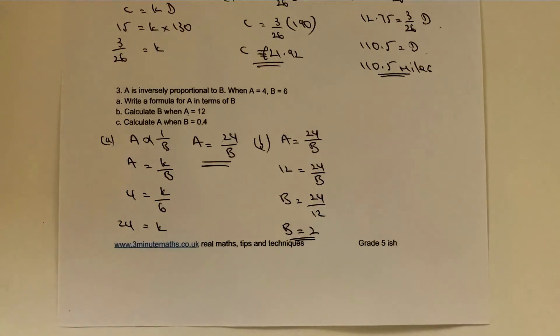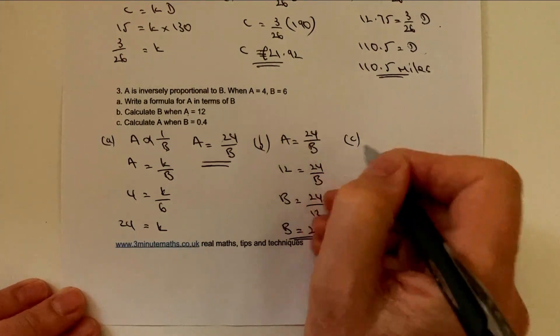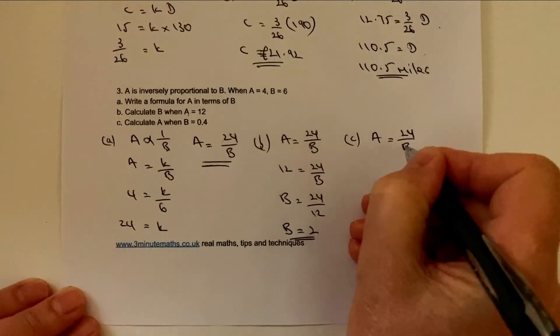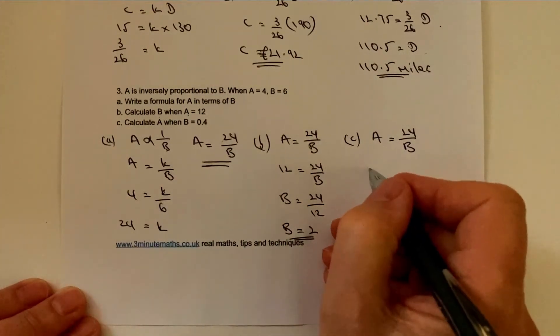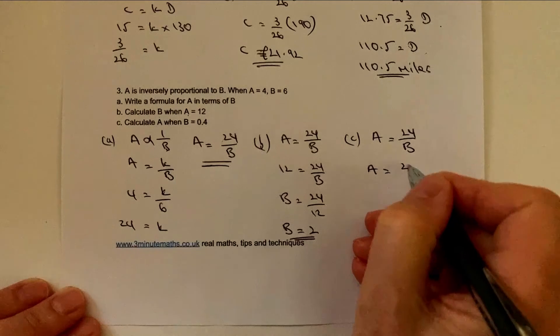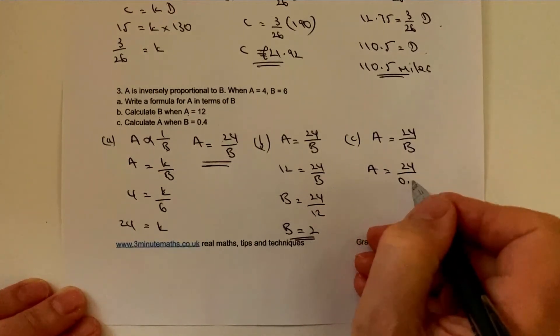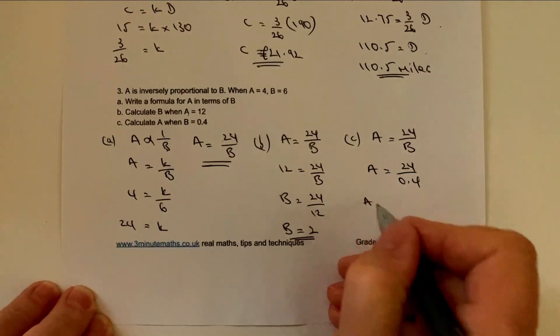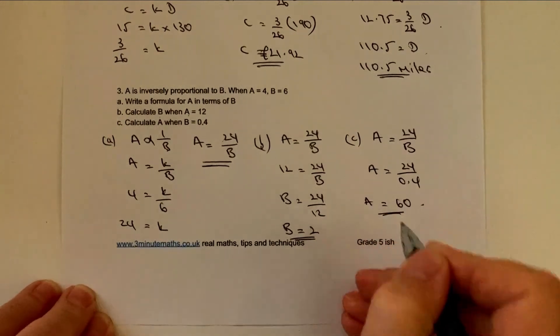Final question then is C. Calculate A when B equals 0.4. So it's slightly a bit easier, actually. Again, I'm going to use exactly the same formula, A equals 24 over B. But this time I'm working out A, and B is actually 0.4. So therefore A must equal 60. That's the end of this particular video.